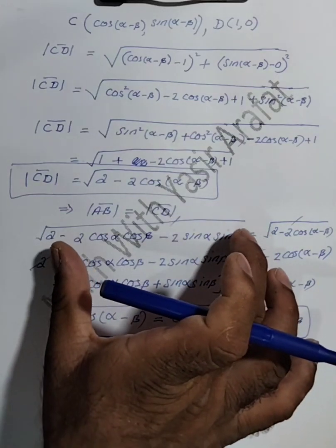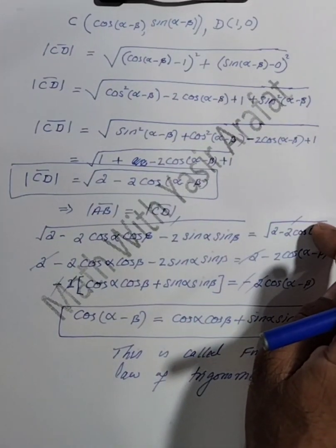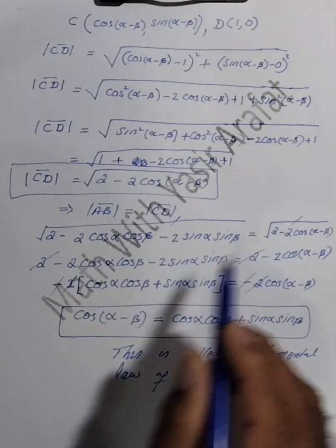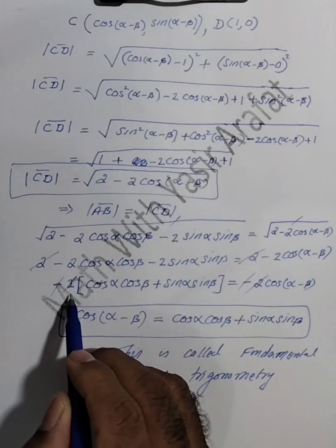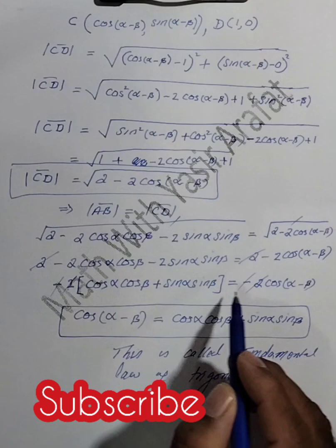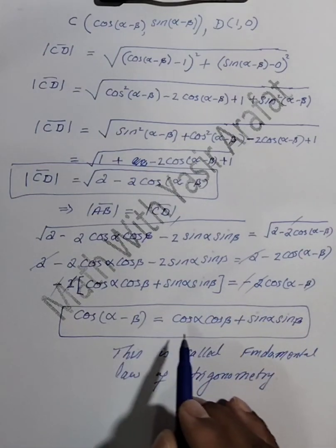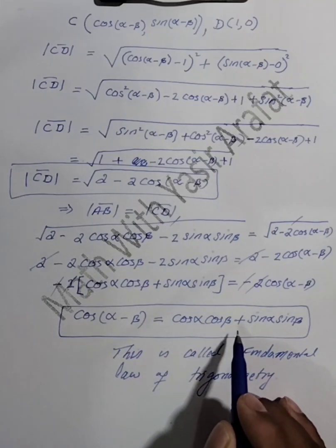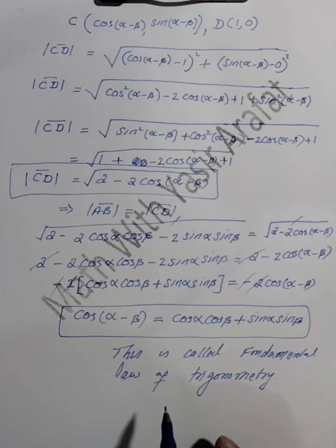Since AB = CD, squaring both sides: 2 - 2cos α cos β - 2sin α sin β = 2 - 2cos(α-β). Taking out -2 common and cancelling from both sides: cos α cos β + sin α sin β = cos(α-β). Therefore, cos(α-β) = cos α cos β + sin α sin β. This is the fundamental law of trigonometry — a very important derivation.